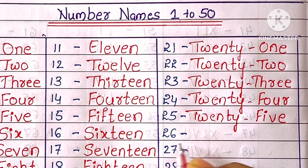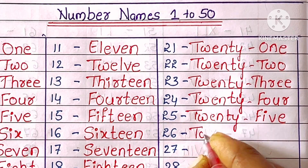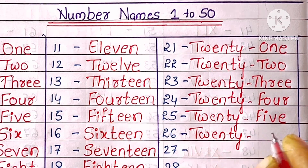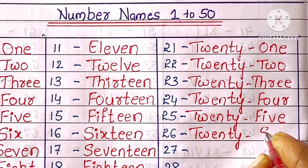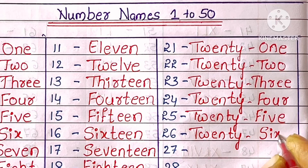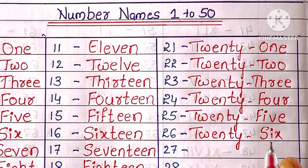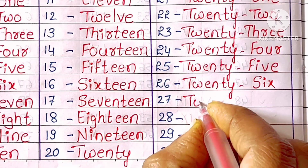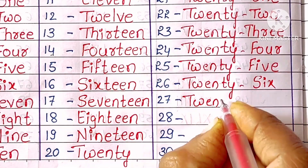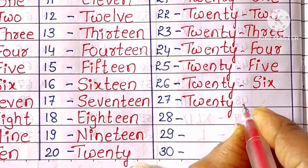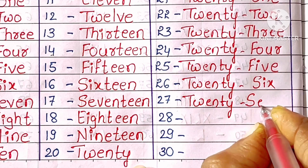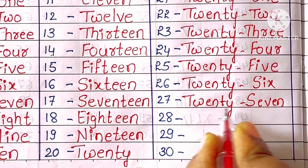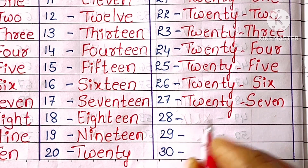26. T-W-E-N-T-Y-S-I-X. Twenty-six. 27. T-W-E-N-T-Y-S-E-V-E-N. Twenty-seven.